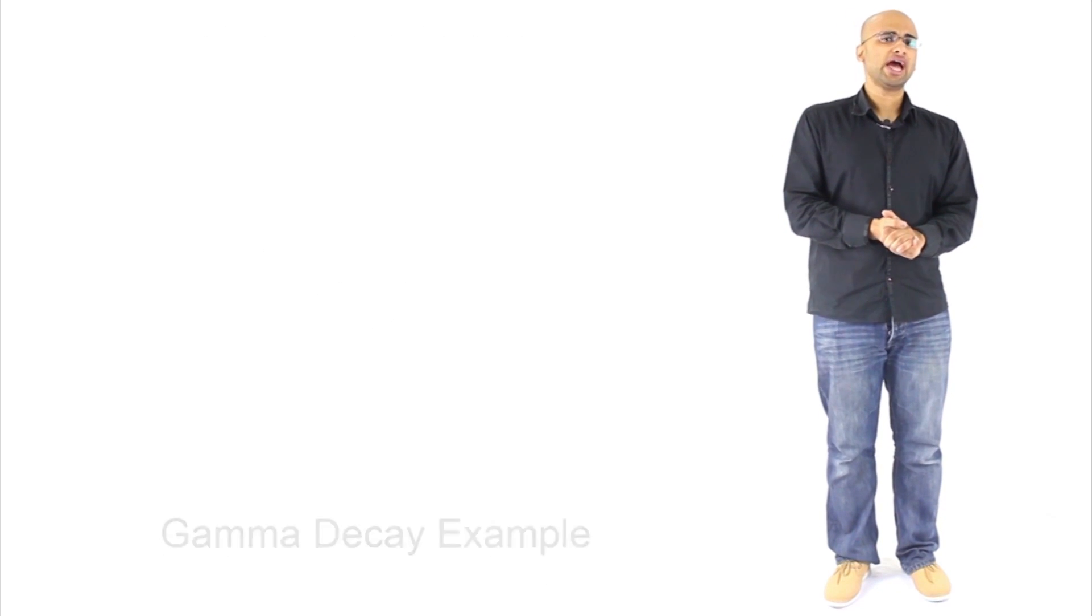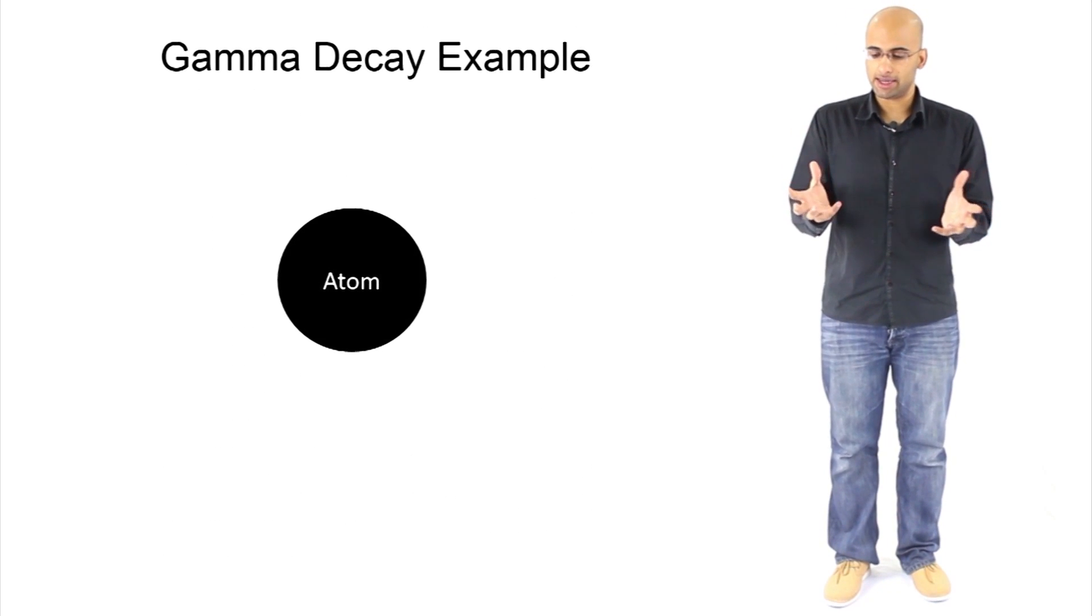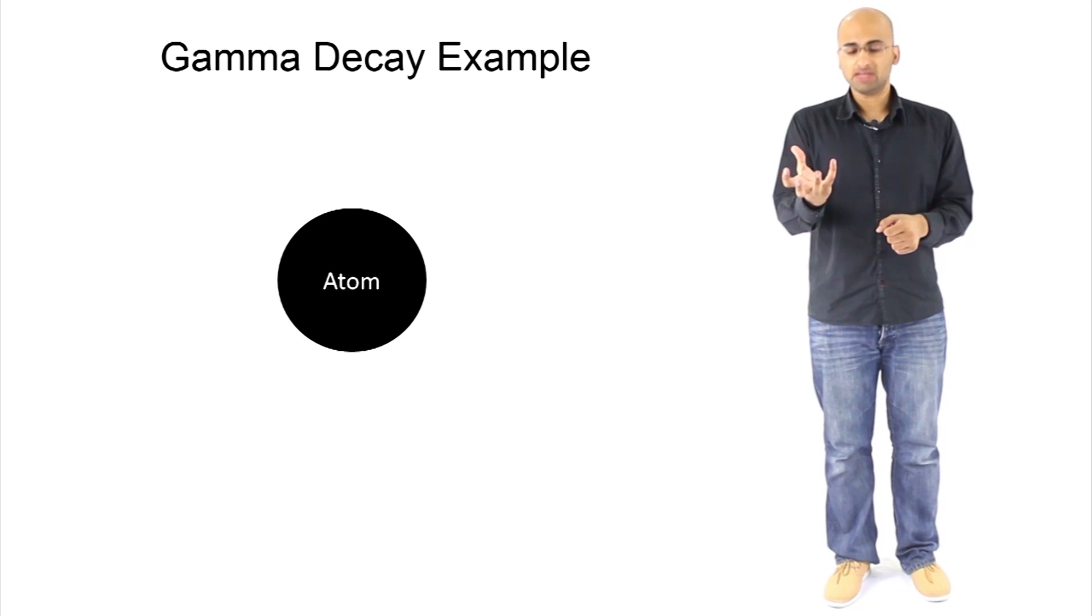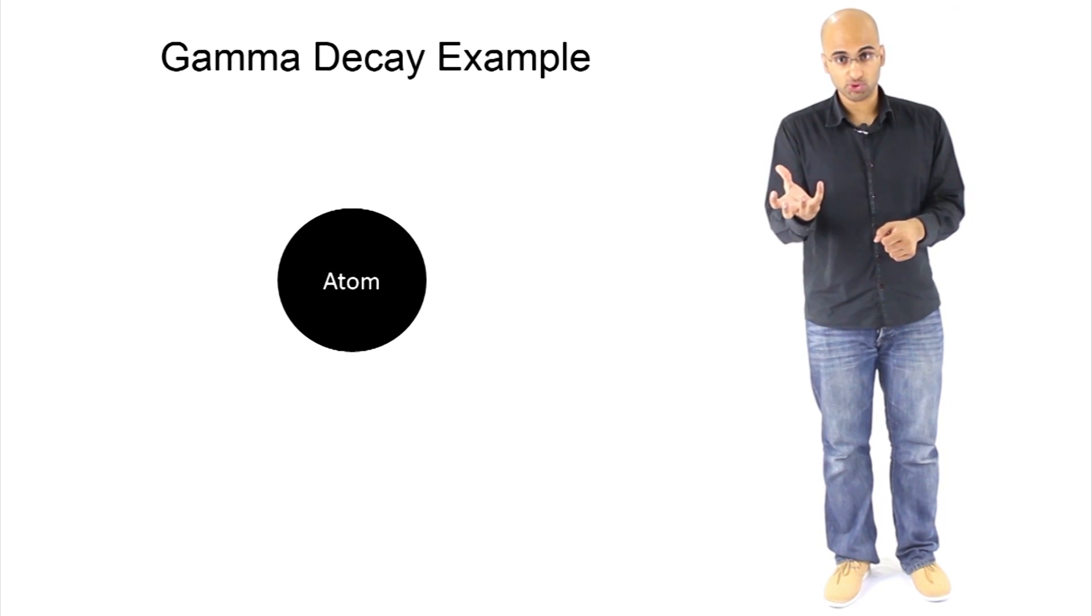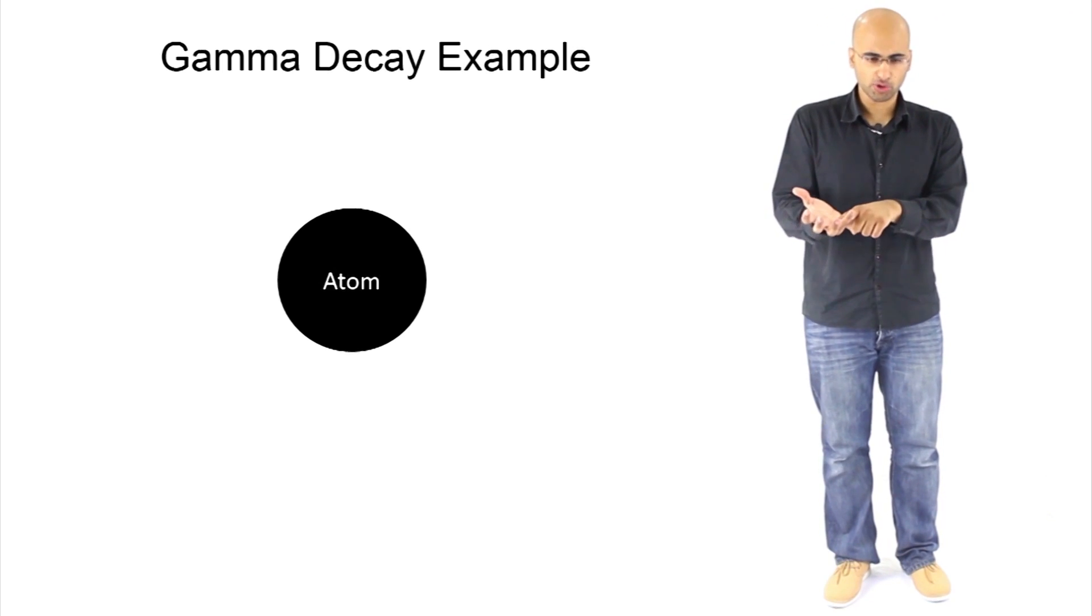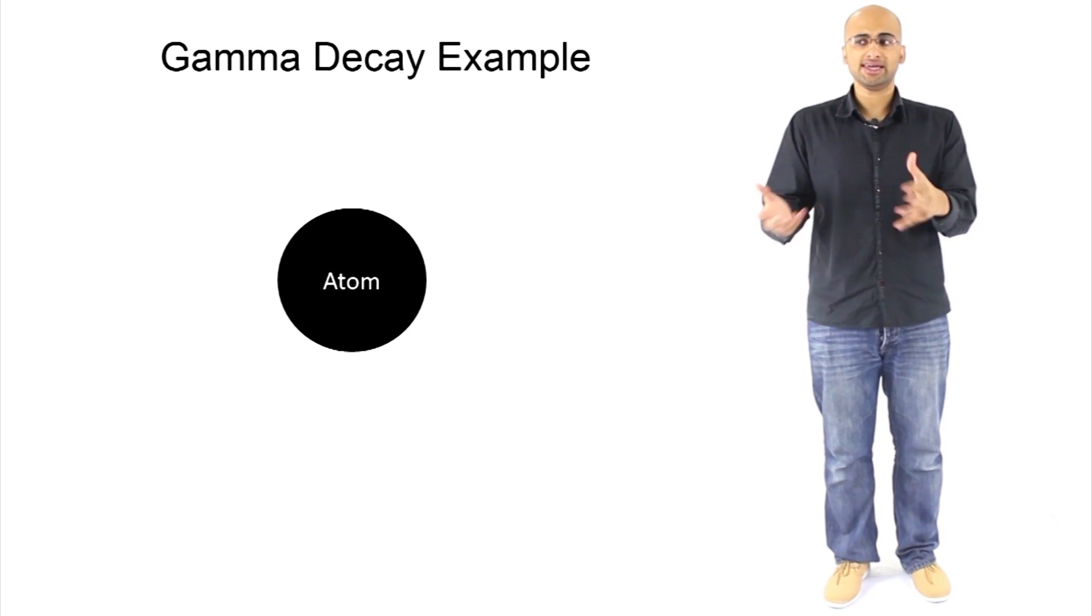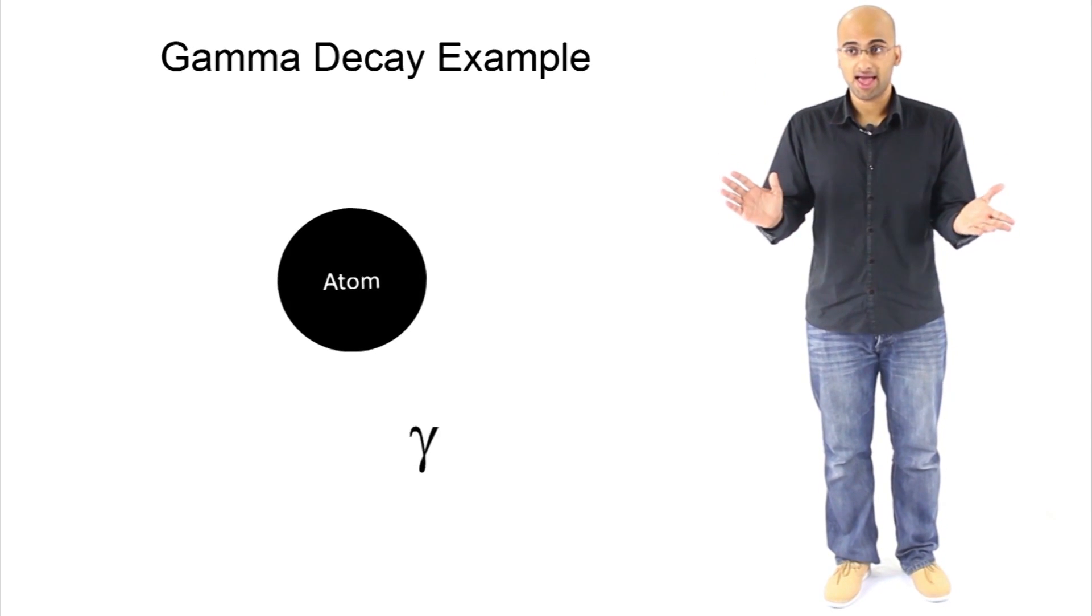There is another type of decay called gamma decay. In a gamma decay, the nucleus of an atom doesn't really change in terms of the number of protons and neutrons. But what happens is that you could say it releases excess energy.